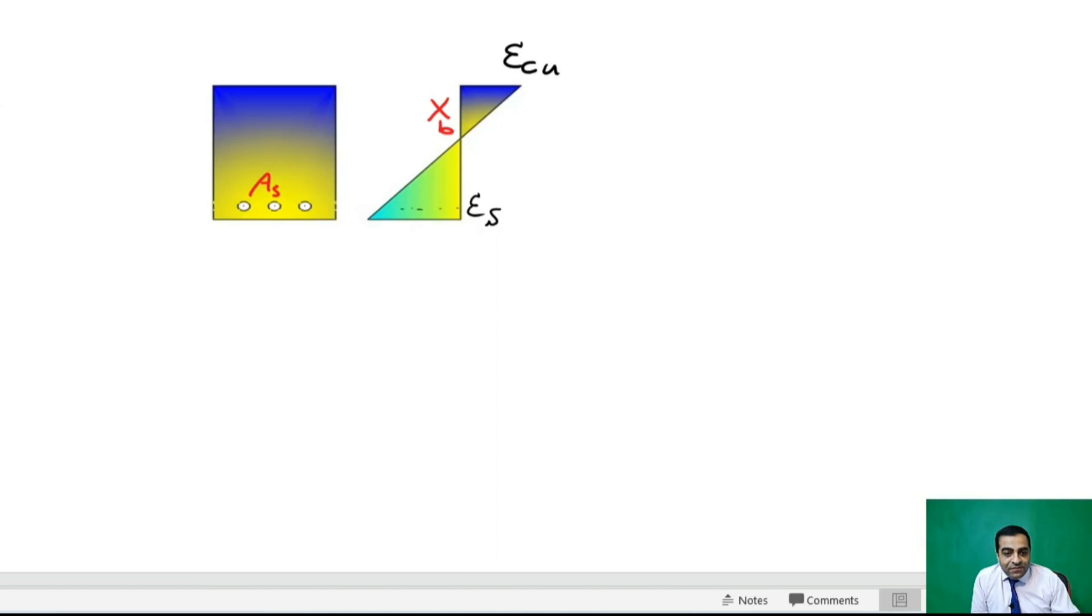A reinforced concrete beam with a width of 40 centimeters, or 400 millimeters, and the effective depth of the beam is 600 millimeters. From here we calculate. From ACI, we have that relation of balanced depth as...